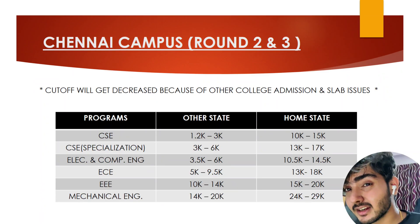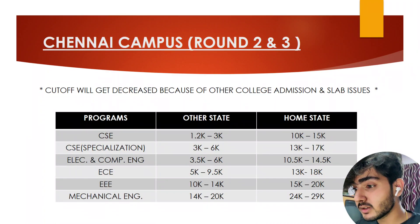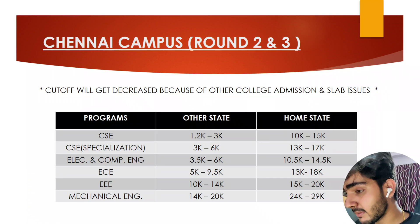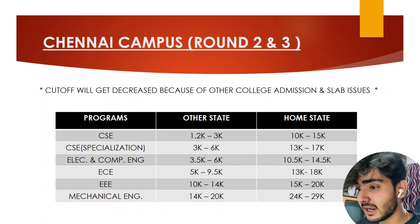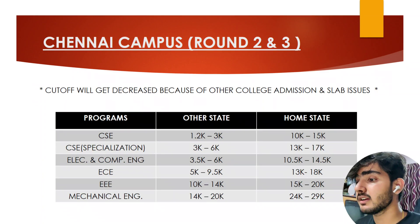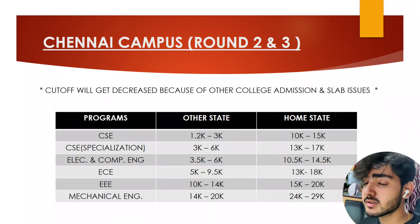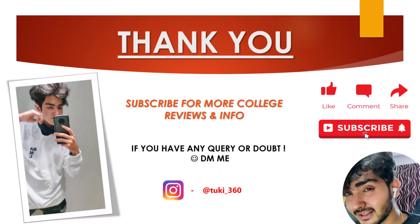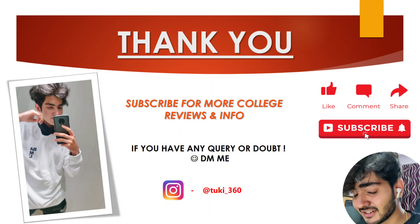So these are the four campus cutoff ranks for round two and round three. If you didn't get any seat in round one, you can change your preferences according to these ranks. Remember: the left-side ranking is for round two and the right-side ranking is the end of round three. For example, the band of 1,200 to 3,000 for Computer Science covers round two through round three. If you have any confusion, watch this video again and comment below.